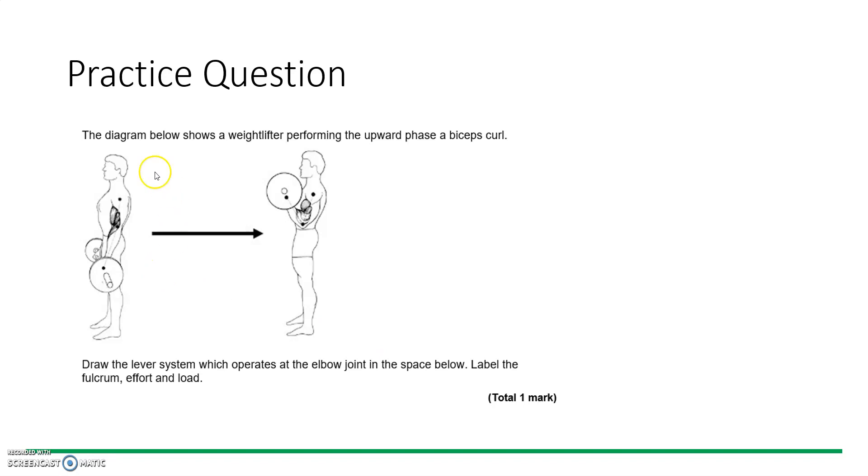Another practice question. Diagram shows a weightlifter performing an upward phase of the biceps curl. So again, we're reading the question - it's upward phase, not the downward, but the upward phase, so biceps are concentrically contracting. Draw the lever system which operates at the elbow joint in the space below. Label the fulcrum - again we've asked you to label.